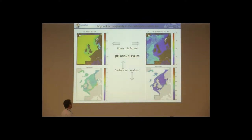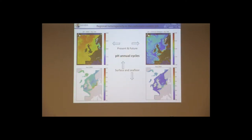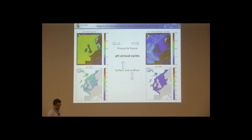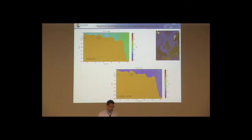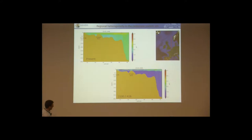These are animations from our model to give an indication of how spatially and temporally variable pH really is. We've evaluated this against data and it does a reasonable job. You've got surface on the top, sea floor on the bottom, present day and future. The real message is the spatial variability, which is quite extreme. If you're going to be measuring it, you've got to pick and choose your places or transects quite carefully.